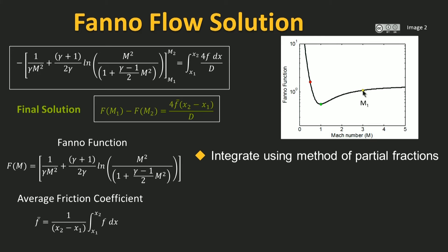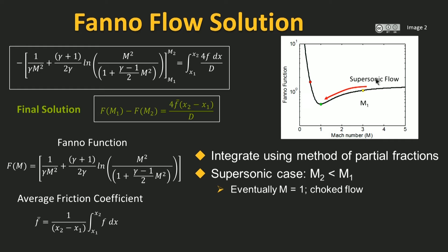Clearly, for that to happen, the only branch of this function where the Mach number allows for the Fanno function value F(M2) to be smaller than F(M1) is in the supersonic branch. Therefore, for supersonic flow, as you traverse downstream in the pipe, the Mach number will be smaller and smaller, until eventually it reaches Mach number one, which is the lowest value that the Fanno function can attain. At this condition, the flow is choked and we can go no further. If we try to increase the length of the pipe beyond that, nature will make sure that pressure waves and shock waves form upstream so as to change the inlet conditions to maintain equality between the left hand side and the right hand side.